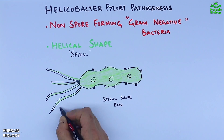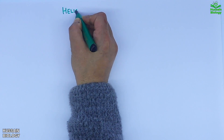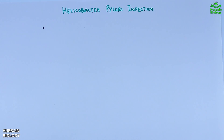With flagella at one end. On its body we have different types of binding factors, which we are going to see later on in this video. First of all, let's see the infection of Helicobacter pylori.